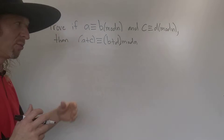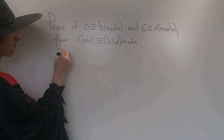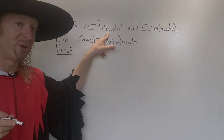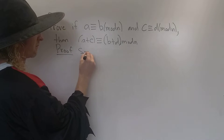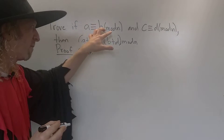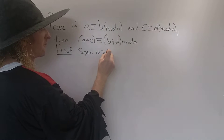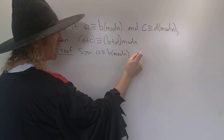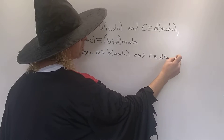Let's go ahead and go through the proof. This is an if-then statement, so whenever you're proving an if-then statement, you start by assuming the hypothesis. So we'll write 'suppose': A congruent to B modulo N and C congruent to D modulo N.